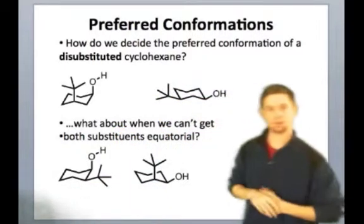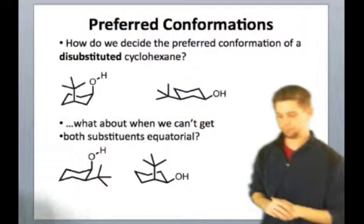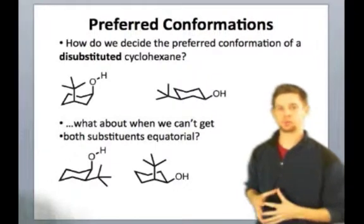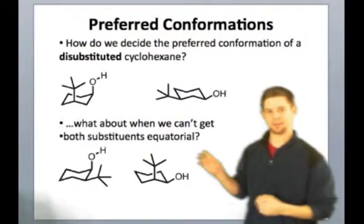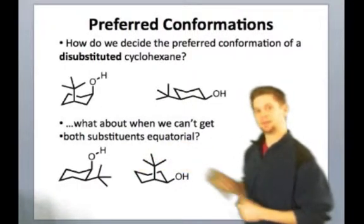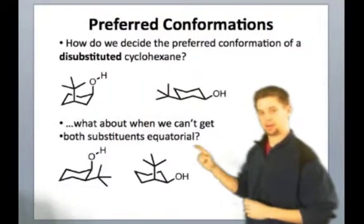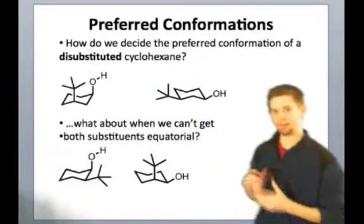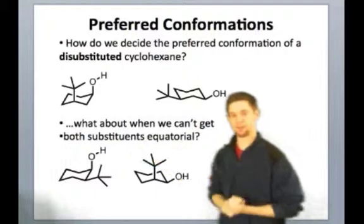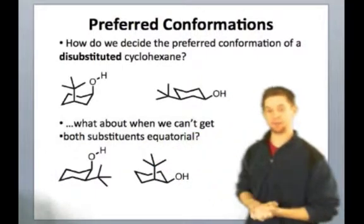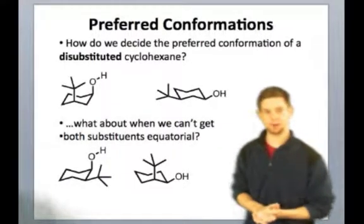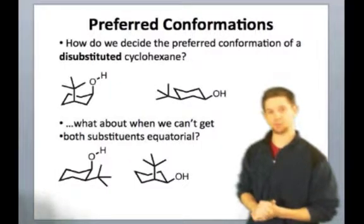And actually, because the tert-butyl group's A value is so large, you can use it to lock the conformation of cycloalkanes. So these two molecules are actually related by a chair flip, but you're going to see almost none of this molecule on the left here. The reason for that is because the tert-butyl group really wants to occupy that equatorial position. So there's going to be very little of that axial tert-butyl group around at any one time that can influence reactivity in very profound ways that we'll talk about in more detail in chapter four.